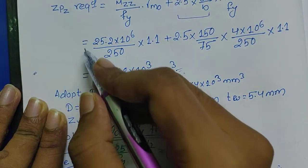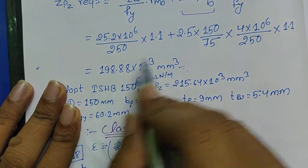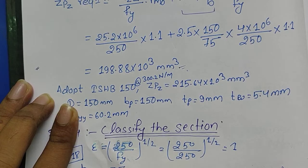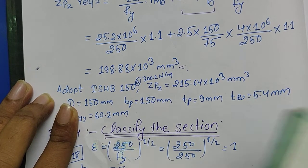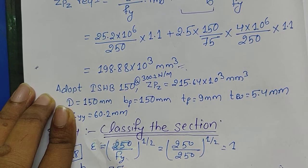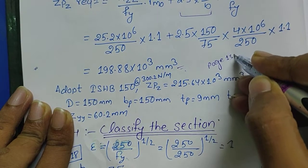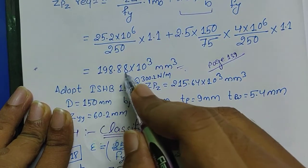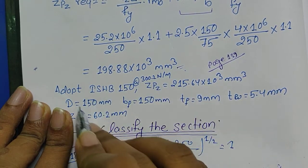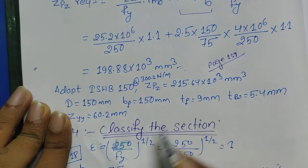In the question I was told to design I section purlin, so I have used my code page number 139. Selection is done on the basis of ZPZ required. We have to take a value little greater than this, so I have selected Indian standard happy beam 150 at 300.2 and I have copied all this value. The actual ZPZ value of this section is this much, so I have taken all the values.